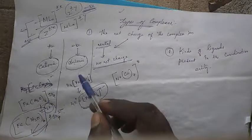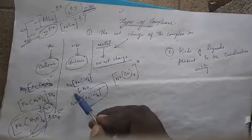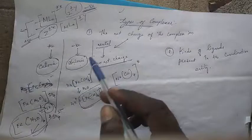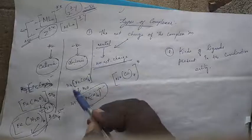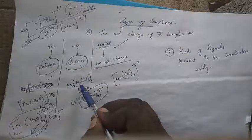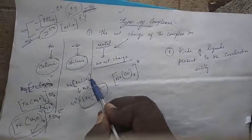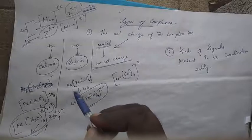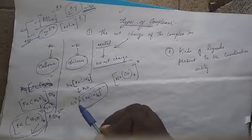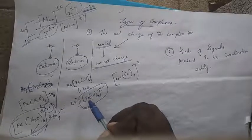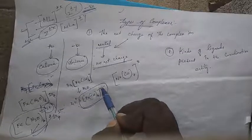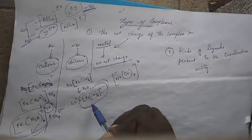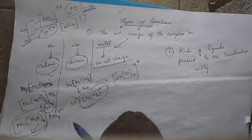Next, another example: K4[Fe(CN)6] — an anionic complex. On hydrolysis of this complex, it gives 4K+ plus [Fe(CN)6]4−. The coordination sphere [Fe(CN)6] has a charge of 4 minus, which is negative, therefore it is an anionic complex.